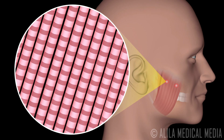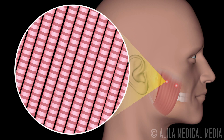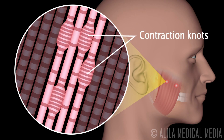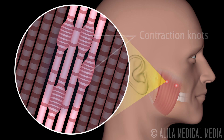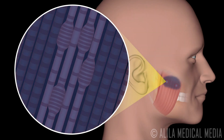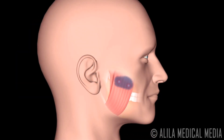A trigger point is composed of many contraction knots where individual muscle fibers contract and cannot relax. The sustained contraction of muscle sarcomeres compresses local blood supply, resulting in energy shortage of the area. This metabolic crisis activates pain receptors, generating a regional pain pattern that follows a specific nerve passage.